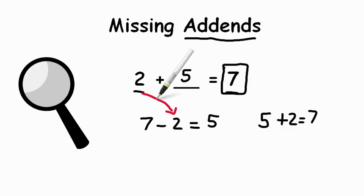You can count on from the number, count it by ones to find the sum, and you'll find your missing addend, or you can flip it around and make it a subtraction fact, and you can find the answer that way as well.